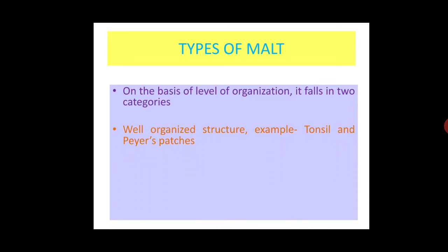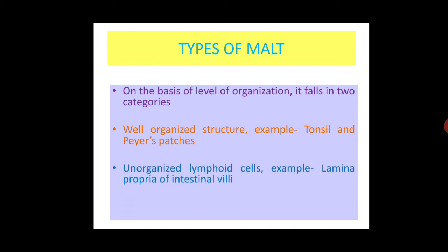Tonsil, Peyer's patches, and appendix are examples of well-organized structures, while lamina propria of intestinal villi, urogenital tract and respiratory tract are examples of unorganized lymphoid cells.